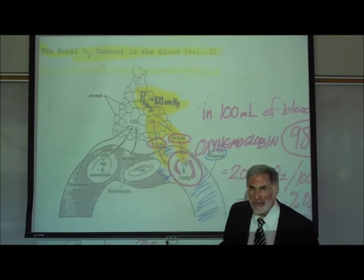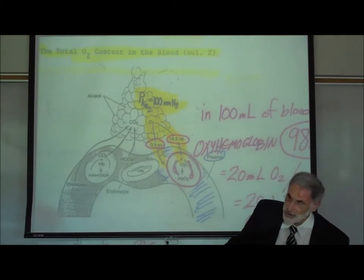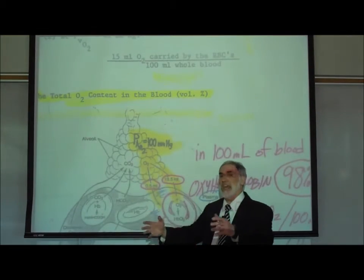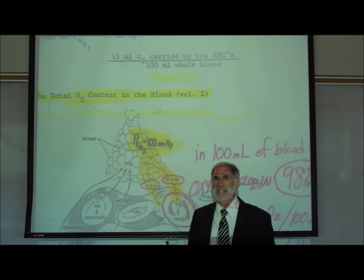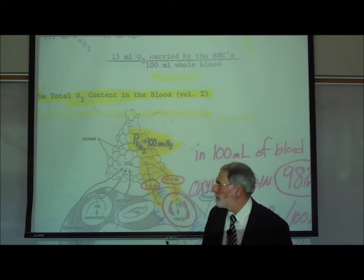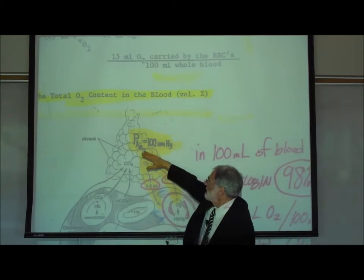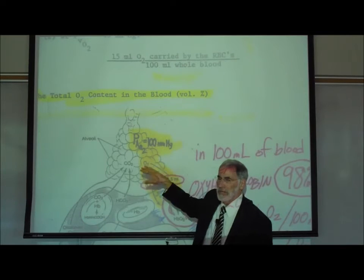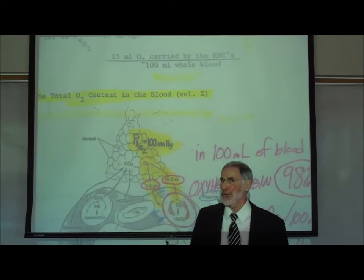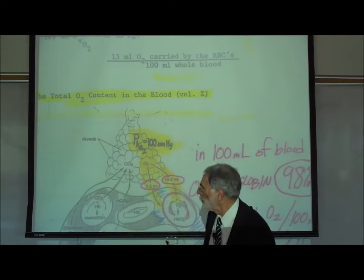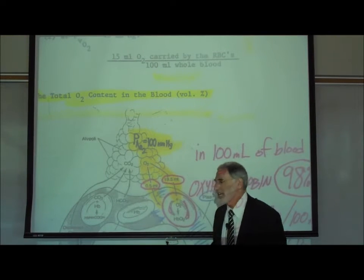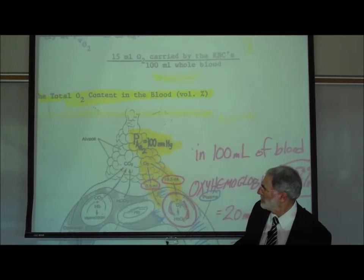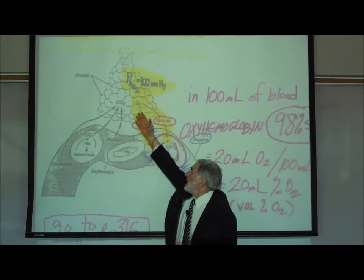We know that the normal amount of oxygen in the lungs, breathing at a normal rate in a normal healthy person, the normal oxygen in the alveoli is about 100 millimeters of mercury or 100 torr. That's called the partial pressure of oxygen in the alveoli of the lungs.